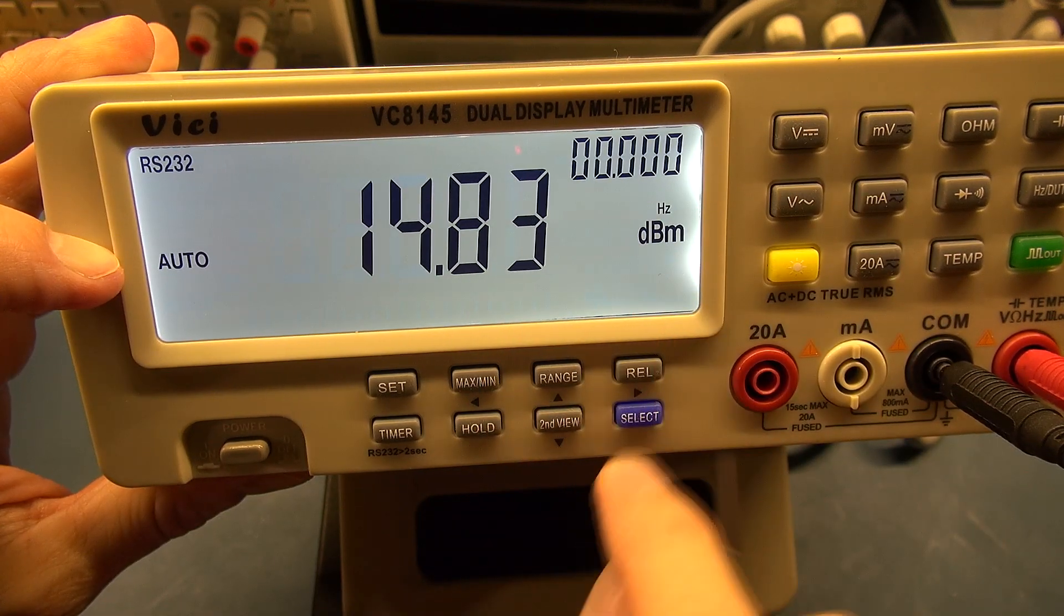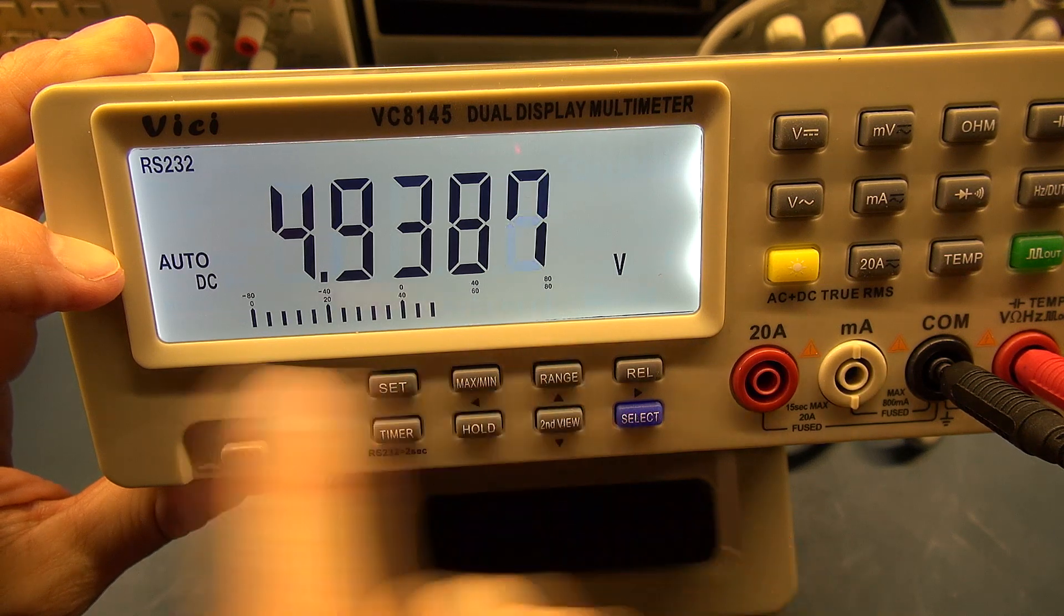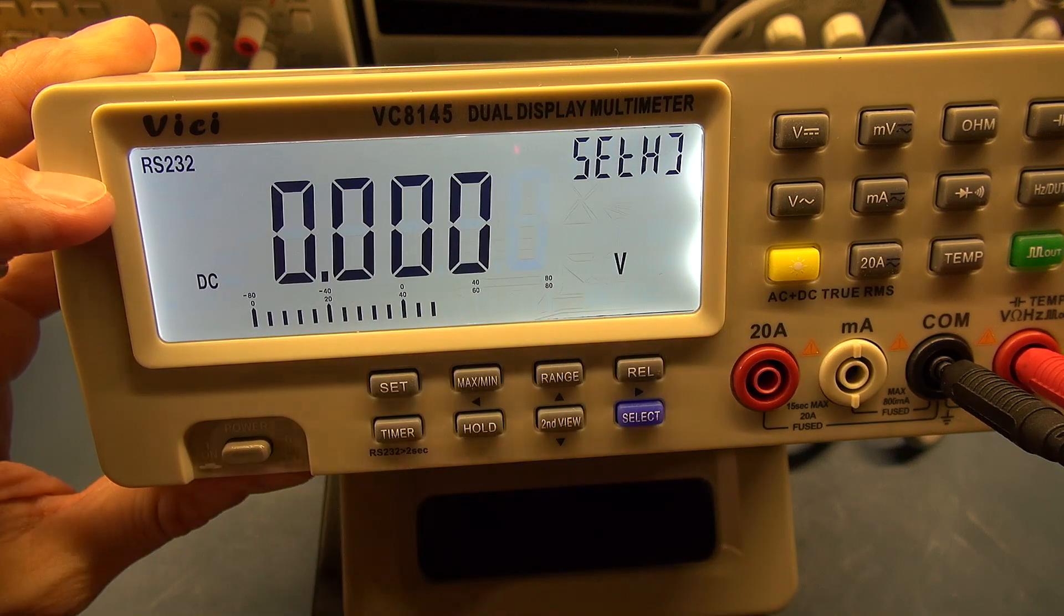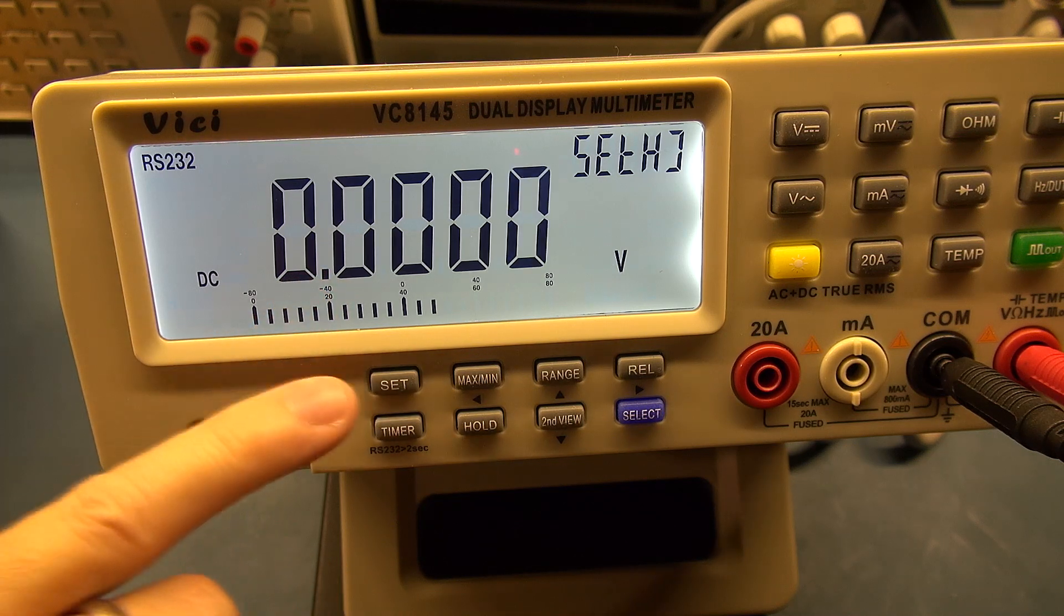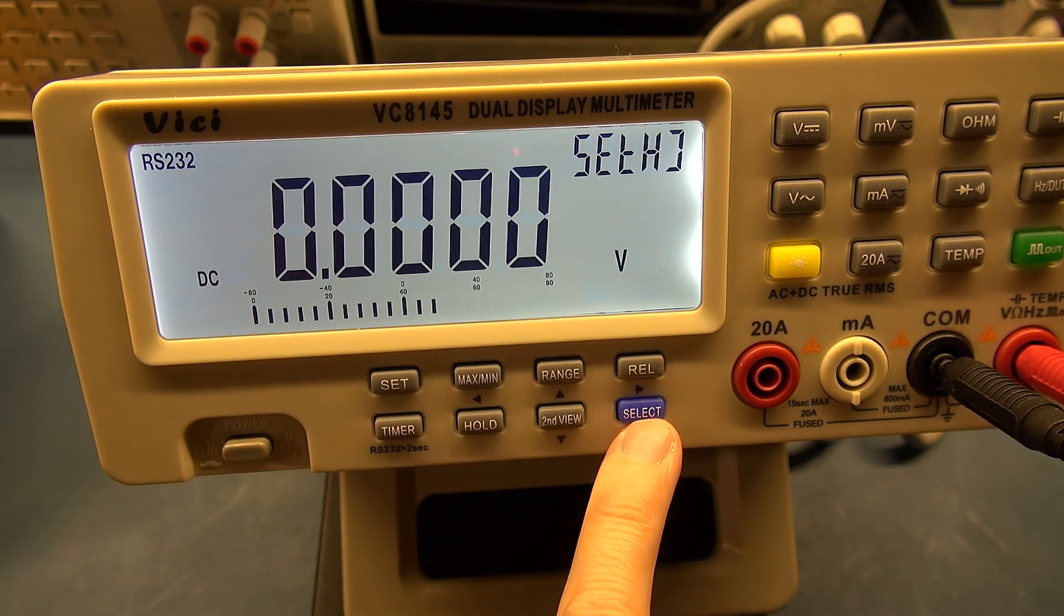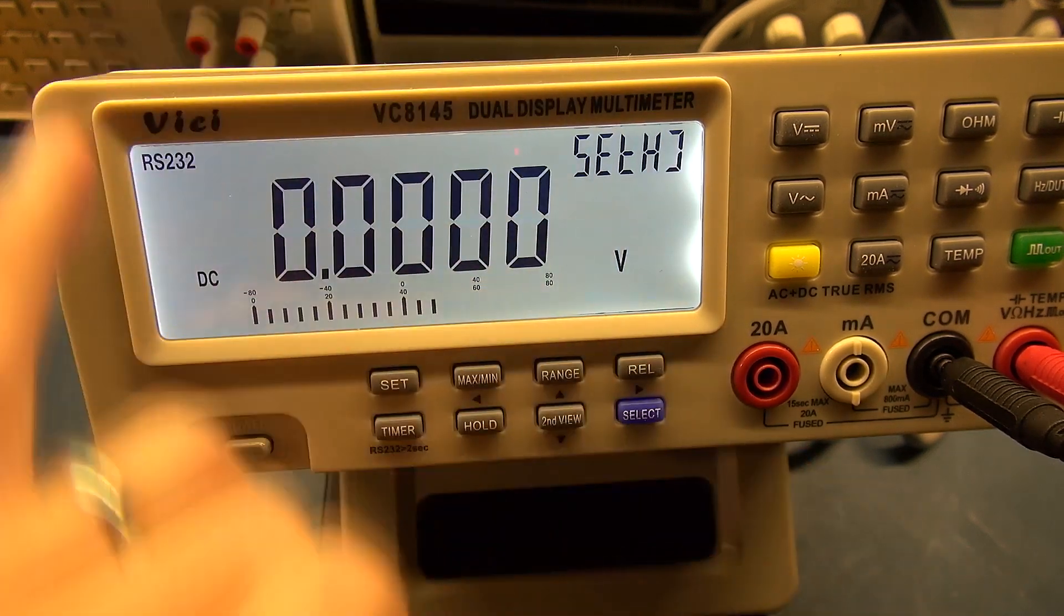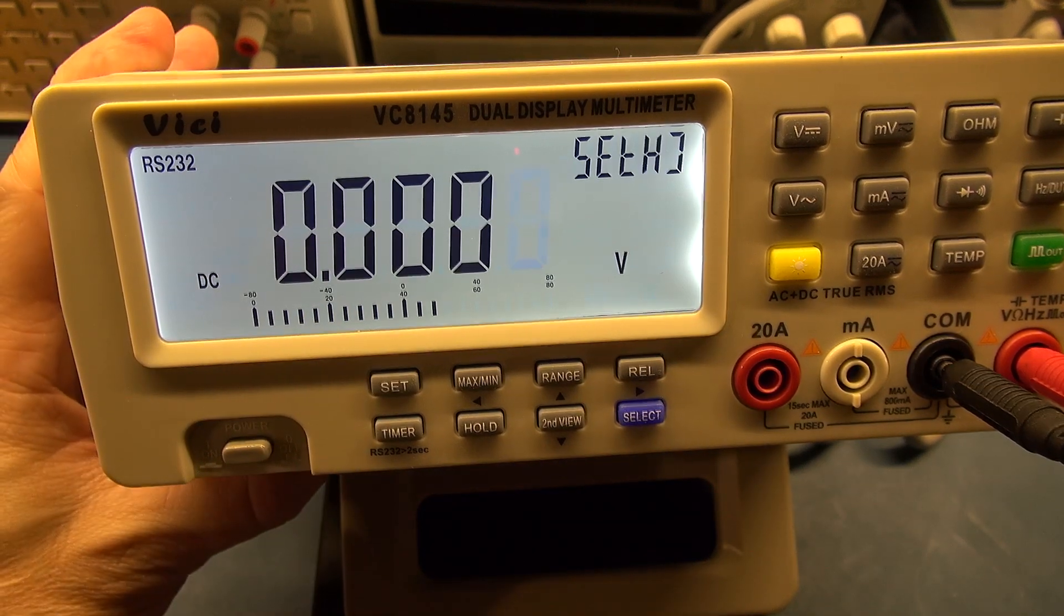You have to do that whole rigmarole where you push the select button, cycle through all the functions for what you're wanting to set for your high low value, and then you can get it to work. To disable it, go back to check that we're on auto range. We're now out of it. It's lost the values. So there's definitely a bug in this.